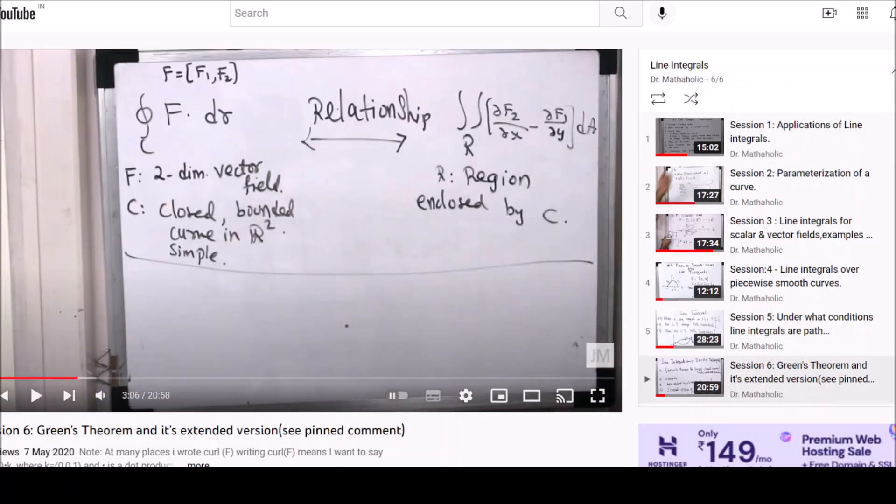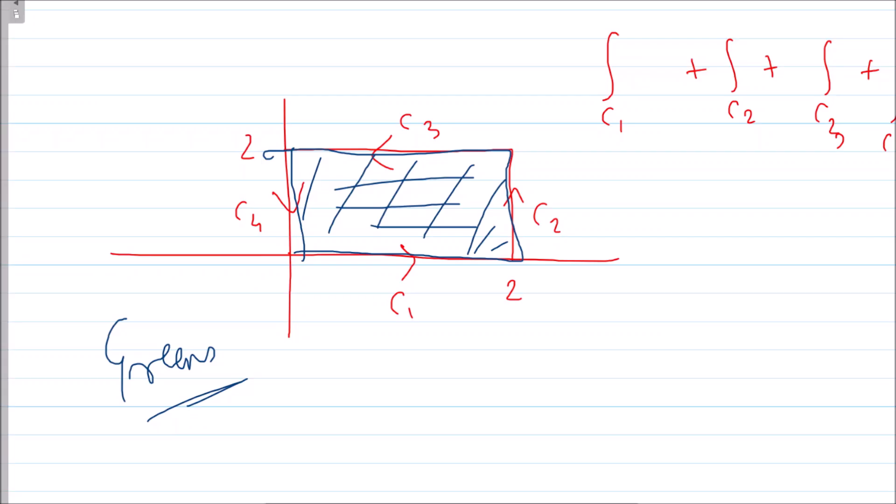Green's theorem says that if you have a vector field F and C is a closed bounded simple curve in R2, then the line integral along that closed curve is the same as the double integration over R, where R is the region enclosed by the curve C.